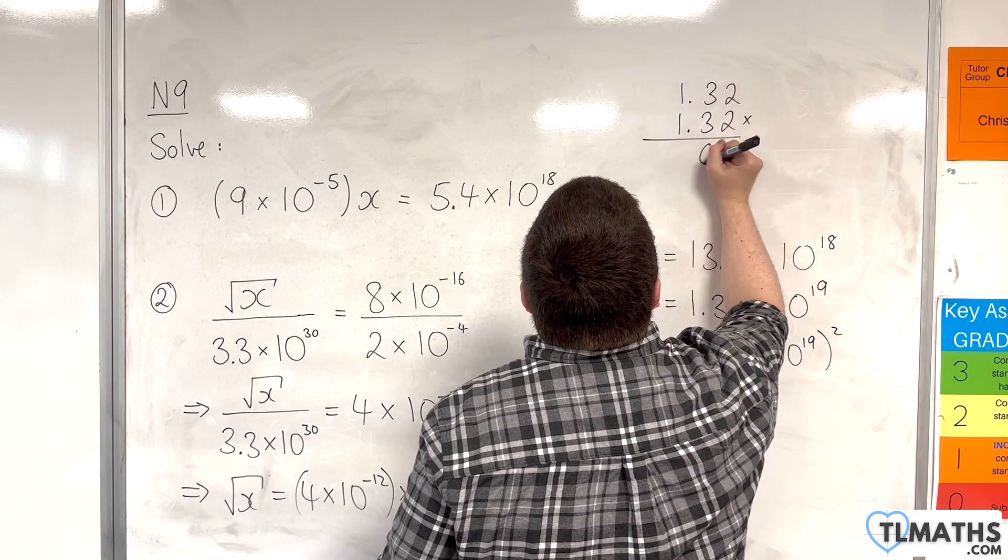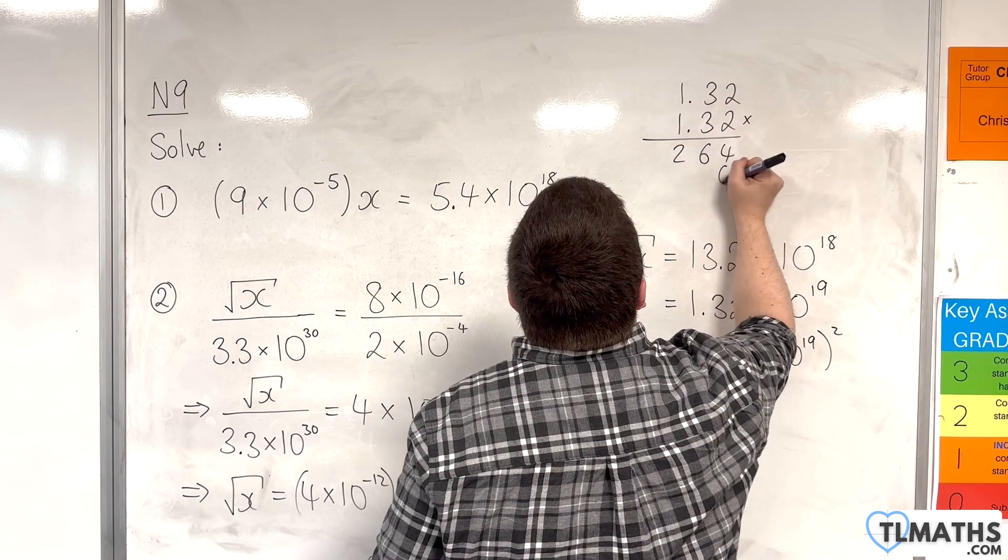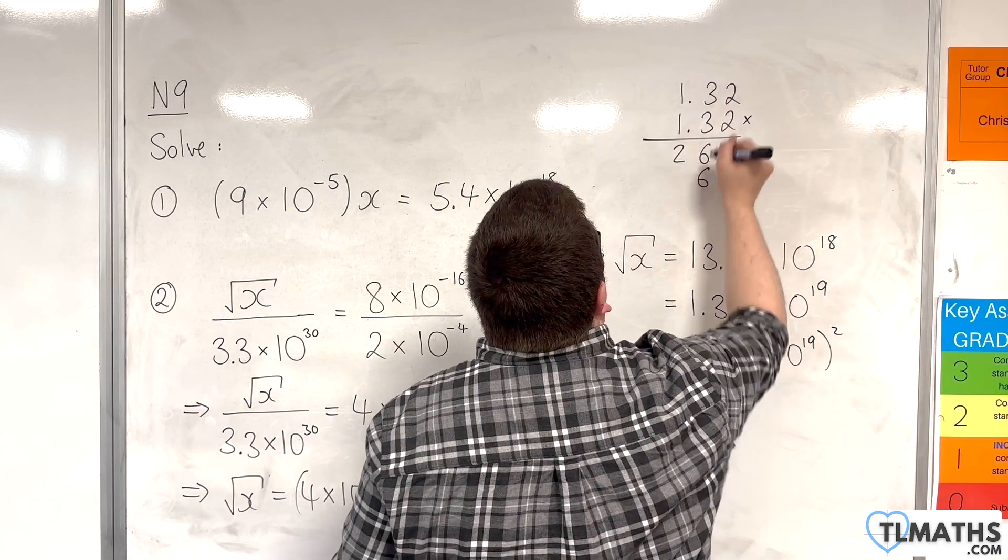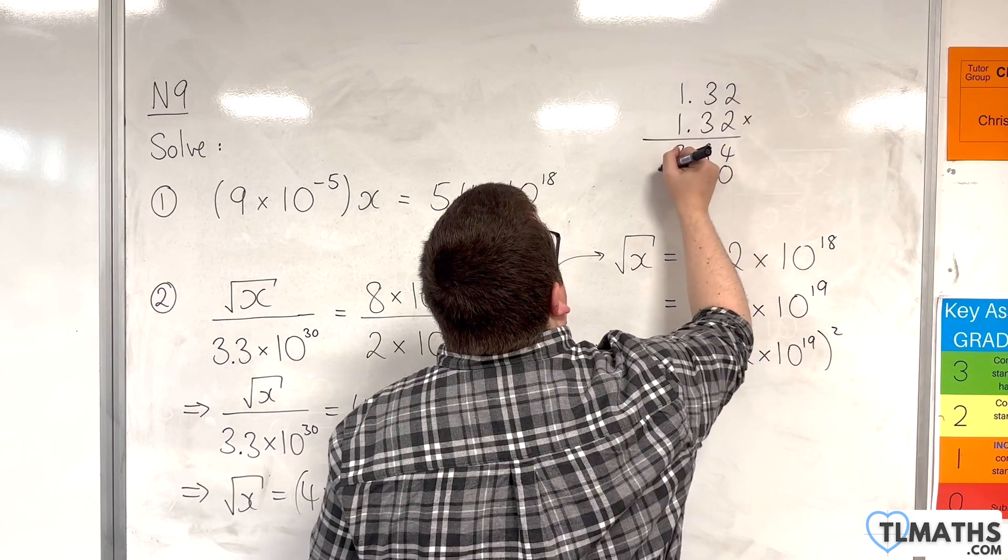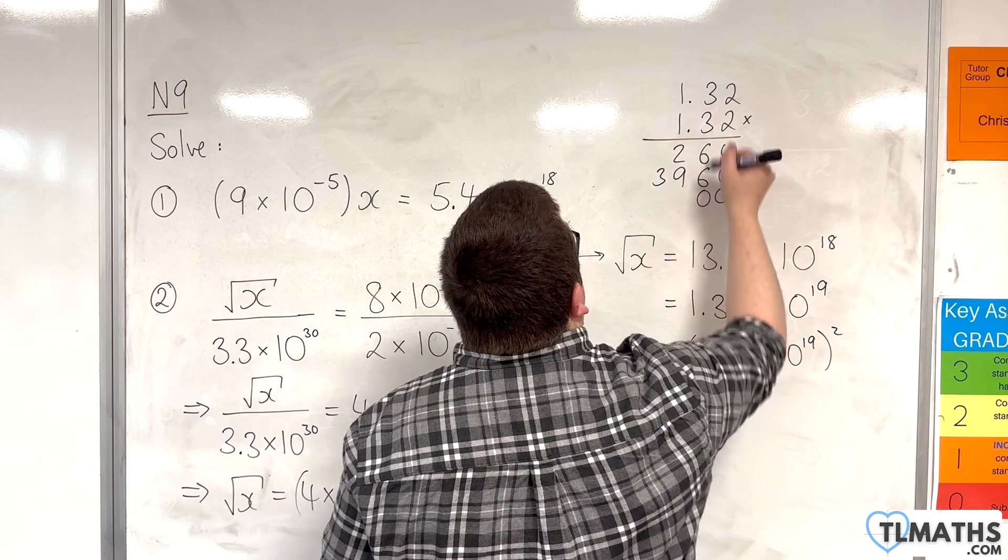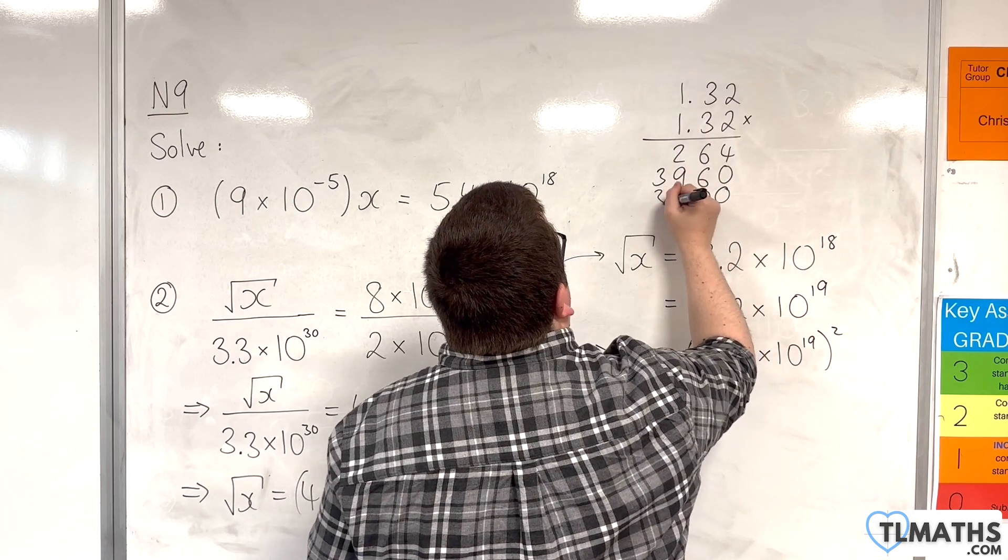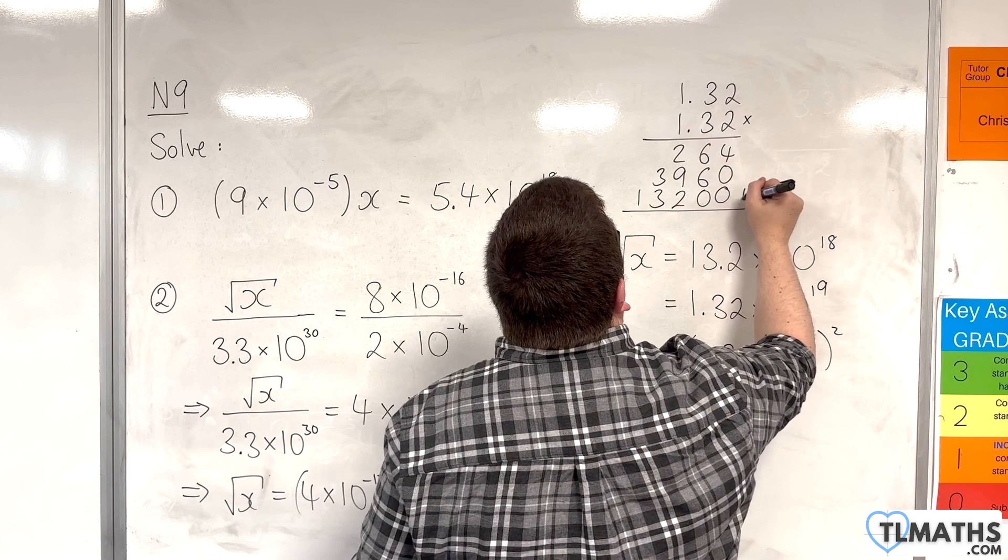2 twos are 4, 2 threes are 6, 2 ones is 2. Bring in a 0. 3 twos are 6, 3 threes are 9, 3 ones are 3. Bring in 2 zeros. 1 times 2, 1 times 3, 1 times 1. Add them all together.